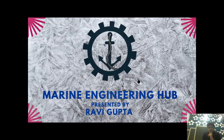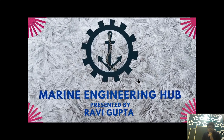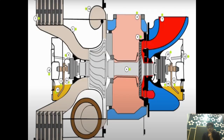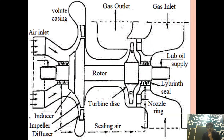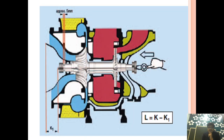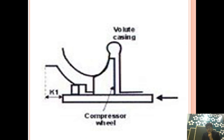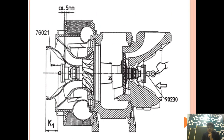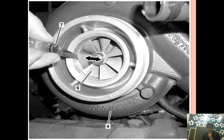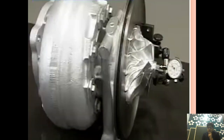Hello friend, welcome to Marine Engineering Hub. This is your narrator Ravi Gupta. Today we are going to talk about a very important topic regarding the clearances in the turbocharger — the various clearances provided in the turbocharger such as K, L, M, axial clearance, and radial clearance. Through a series of diagrams in today's video, we will try to understand what these mean.